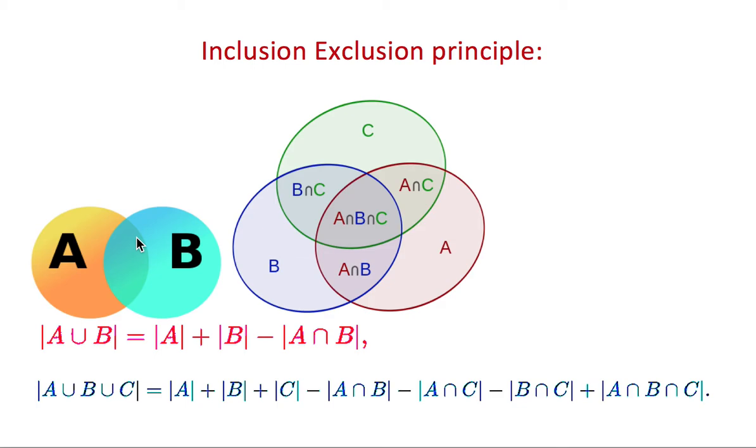includes whatever is present in this circle plus whatever is present in this circle, but the intersection is counted only once in the union. This equals the size of set A plus the size of set B minus whatever is present in the common part, that is the intersection A intersection B.